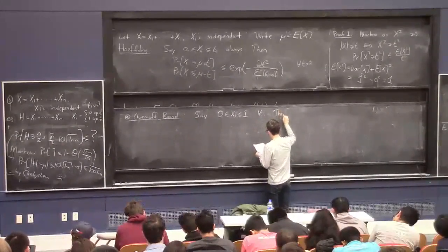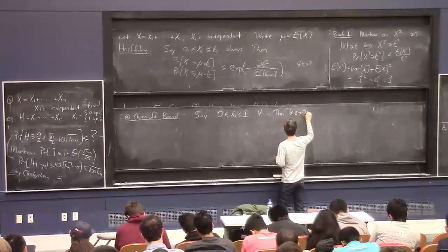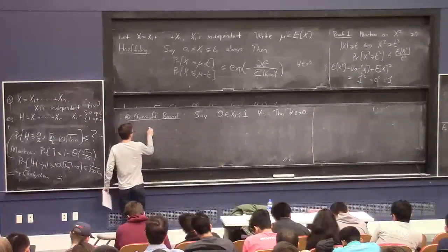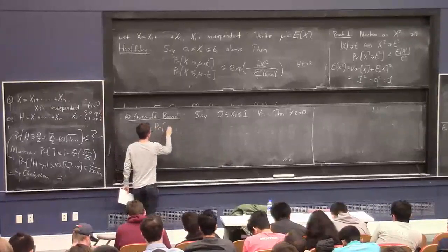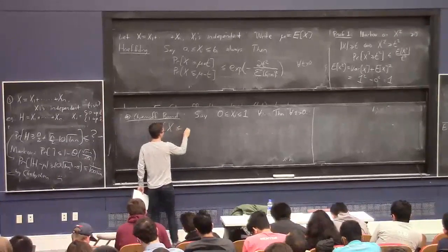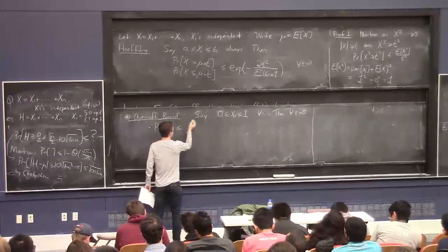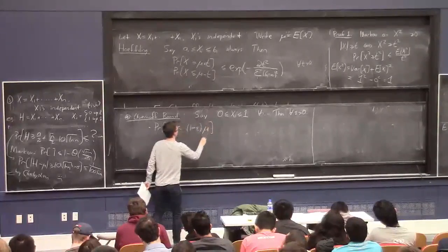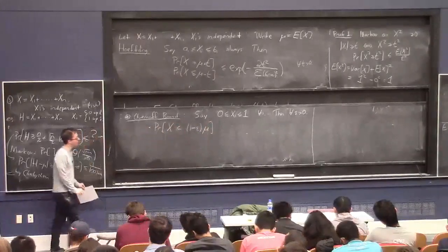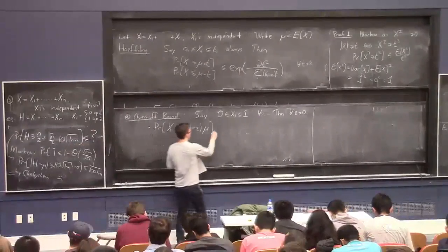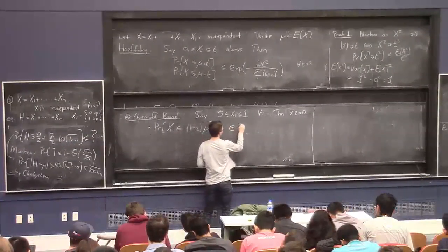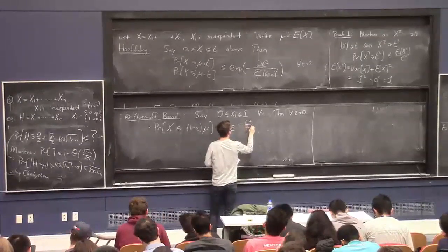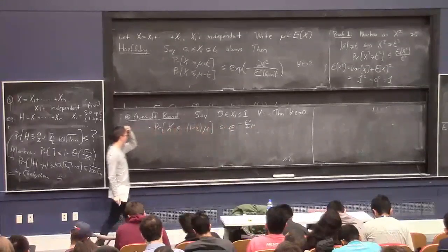Then, for all parameters epsilon greater than 0, the probability that the random variable X is sort of, you can think of this as, like, at most 99% its expectation. So it's at most 1 minus epsilon times its mean. This is upper bounded by e to the minus epsilon squared over 2 times mu.